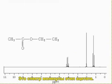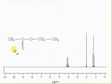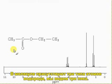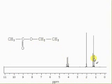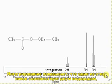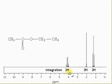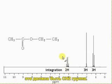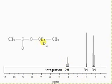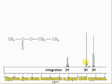Here's the spectrum for this molecule, ethyl ethanoate. There are three types of hydrogen in the molecule, and we can see three peaks in the spectrum. Integration shows that one of these peaks corresponds to two hydrogens, so that must be the CH2 group, and the other two peaks correspond to CH3 groups.